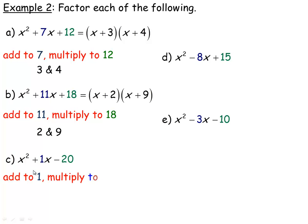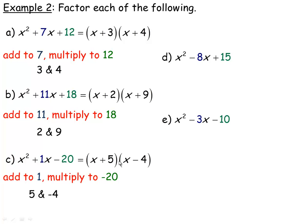Now we're going to start getting a few negatives. The next problem adds to 1 — if you just see an x, the coefficient is 1 — and multiplies to negative 20. Don't miss the negative sign: there are no numbers that add to 1 and multiply to positive 20. When multiplying to a negative, one number has to be negative and one positive. The numbers that work are 5 and negative 4: they add to positive 1 and multiply to negative 20.